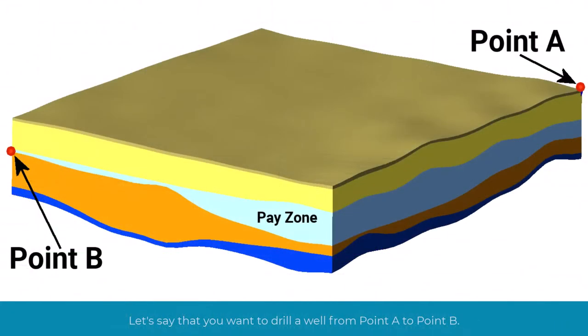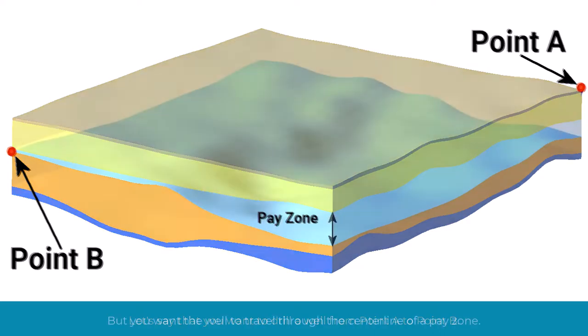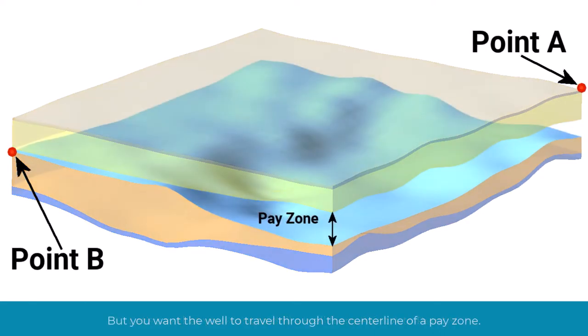Let's say that you want to drill a well from point A to point B, but you want the well to travel through the center line of a pay zone.